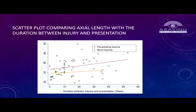This scatter plot shows the comparison between blunt and penetrating trauma. As we can see, the younger the age, the greater the difference in axial length. The upper line represents penetrating and the lower represents blunt trauma, showing that axial length increase is greater in penetrating compared to blunt.